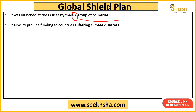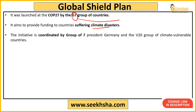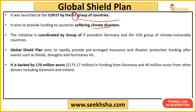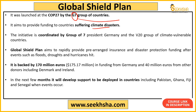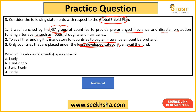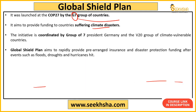The Global Shield works with the V20 group of climate-vulnerable countries — mainly small island nations. It will provide support to countries including Pakistan, Ghana, Fiji, and Senegal where such climate events occur. There is no insurance pre-payment requirement as stated in statement 2. And it's not limited to least developed countries — Pakistan, for example, is not in that category but still receives funding. So only statement 1 is correct.